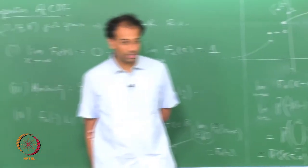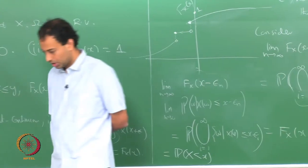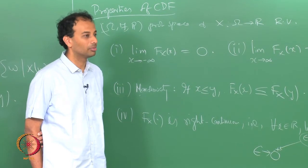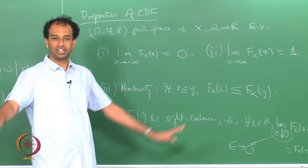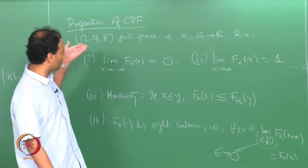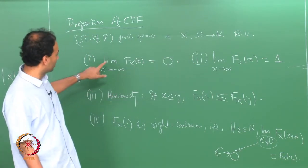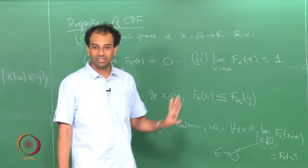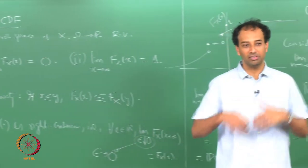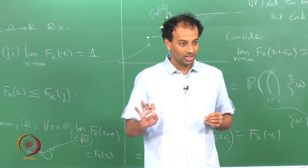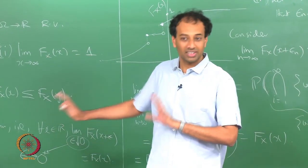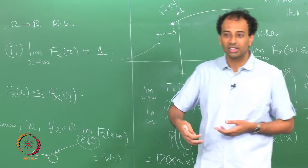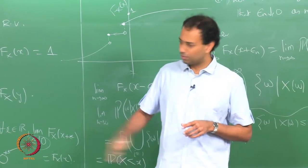Any CDF of any random variable has to satisfy these 4 properties. What is somewhat more remarkable is that there are no other further properties that need to be satisfied: if you give me any function from R to [0,1] that starts at 0, ends at 1, is monotonically non-decreasing, and is right continuous, there exists a random variable whose CDF is exactly that function. So these 4 properties are both necessary and sufficient for a valid CDF.